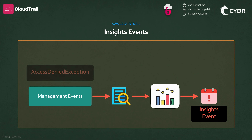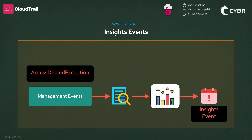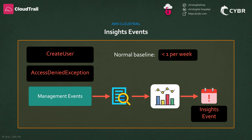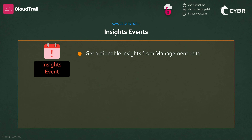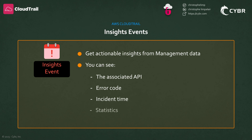It does this by constantly analyzing CloudTrail management events, creating a baseline of normal patterns, and then generating insights events whenever the call volume or error rates go outside of that normal pattern. As an example, if your AWS account normally gets fewer than one or two access denied exception errors in a 7-day period on the AWS IAM API call of createUser, but then out of nowhere you start logging an average of 15 errors per minute, then an insights event would get logged at the start of the unusual error rate activity, and then another insights event would get logged to mark the end of that unusual activity.